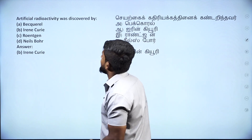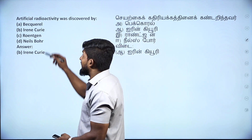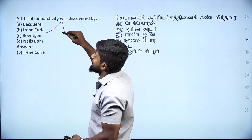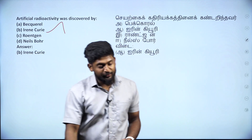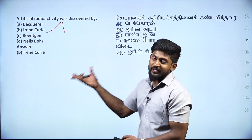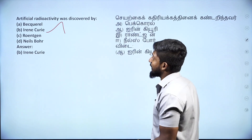Artificial radioactivity was discovered by Irene Curie. The answer is Irene Curie.